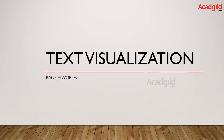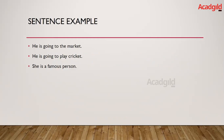Now let us go ahead and see how bag of words is really implemented. I will move to my next slide and show you an example. So I have three different sentences: the first sentence says 'he is going to the market,' the second says 'he is going to play cricket,' and the third says 'she is a famous person.'